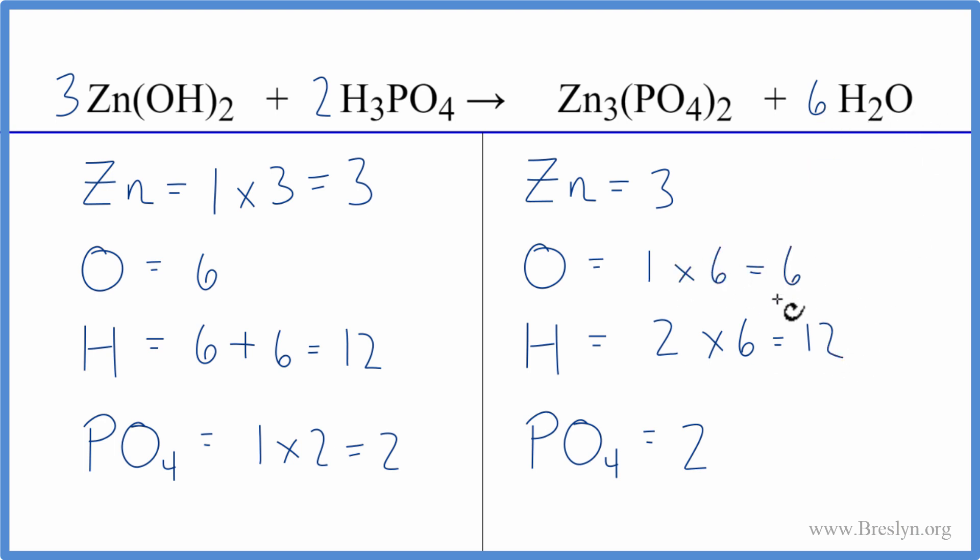So the trick here, leave the oxygens and hydrogens till last, and then if you have a polyatomic ion, like the phosphate, that stays together, we have it here and on this side, count it as one item. We couldn't do that with the hydroxide, because it got broken apart into the water and so on. But with the phosphate, that saved us a lot of trouble.